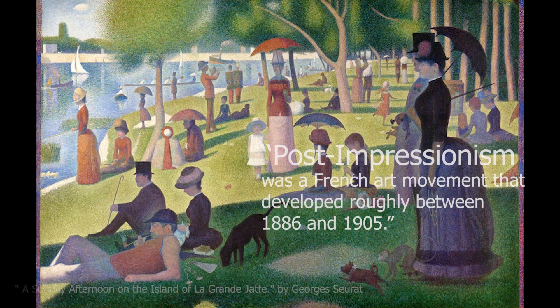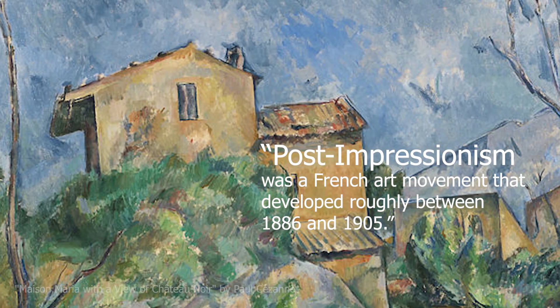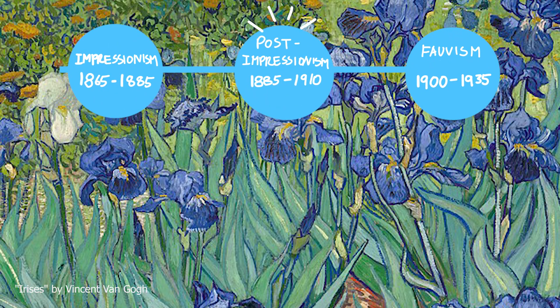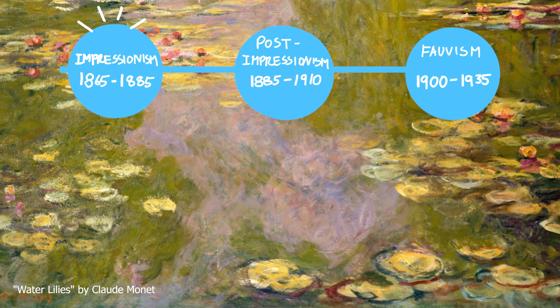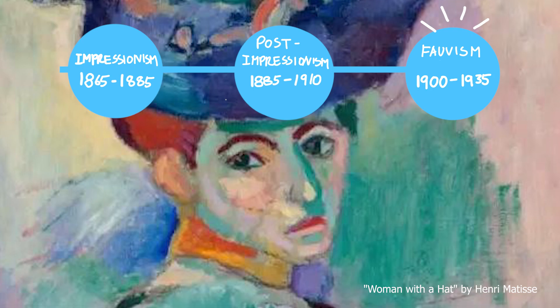Post-impressionism was a French art movement that developed roughly between 1886 and 1905. Before post-impressionism was Impressionism, and right after post-impressionism was the birth of Fauvism. I was really curious to know a little bit more about what inspired post-impressionism, since Impressionism was really booming at the time, and I wondered why post-impressionism came to be.